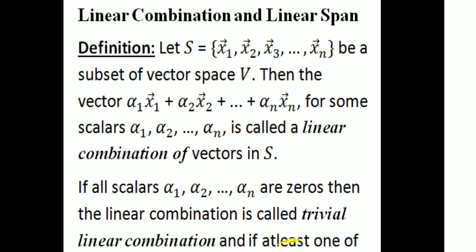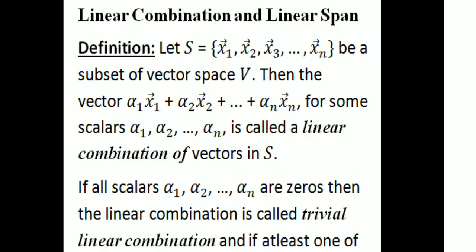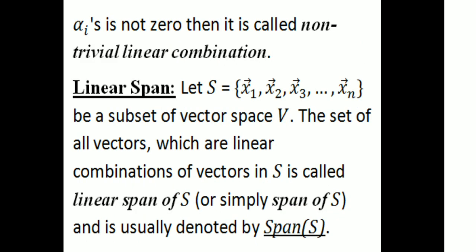If at least one of the αᵢ is not zero, then it is called a non-trivial linear combination. By taking a linear combination α₁x₁ + α₂x₂ + ... + αₙxₙ, we get a vector in V.